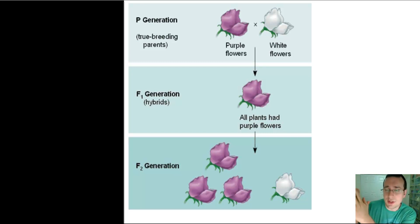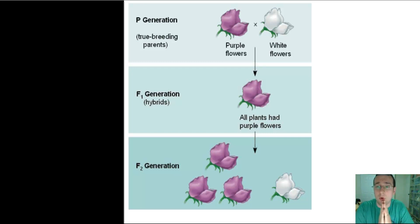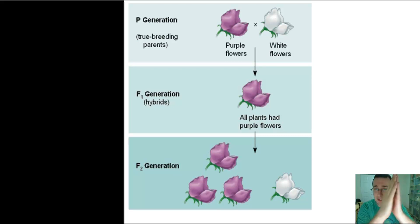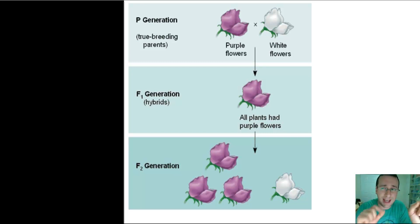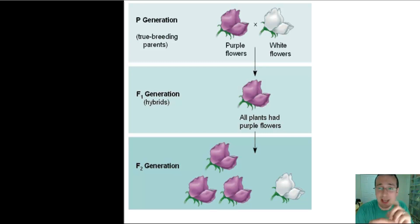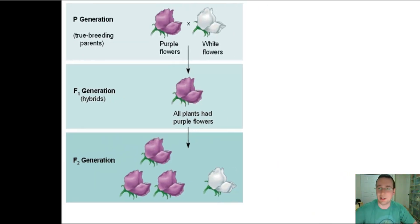During meiosis I, anaphase I, the independent assortment of homologues explains how these genes are actually separating into different gametes, thereby creating the separation of the particles, which can then recombine with the particles of another parent to form new looks, depending on the specific dominance relationships.